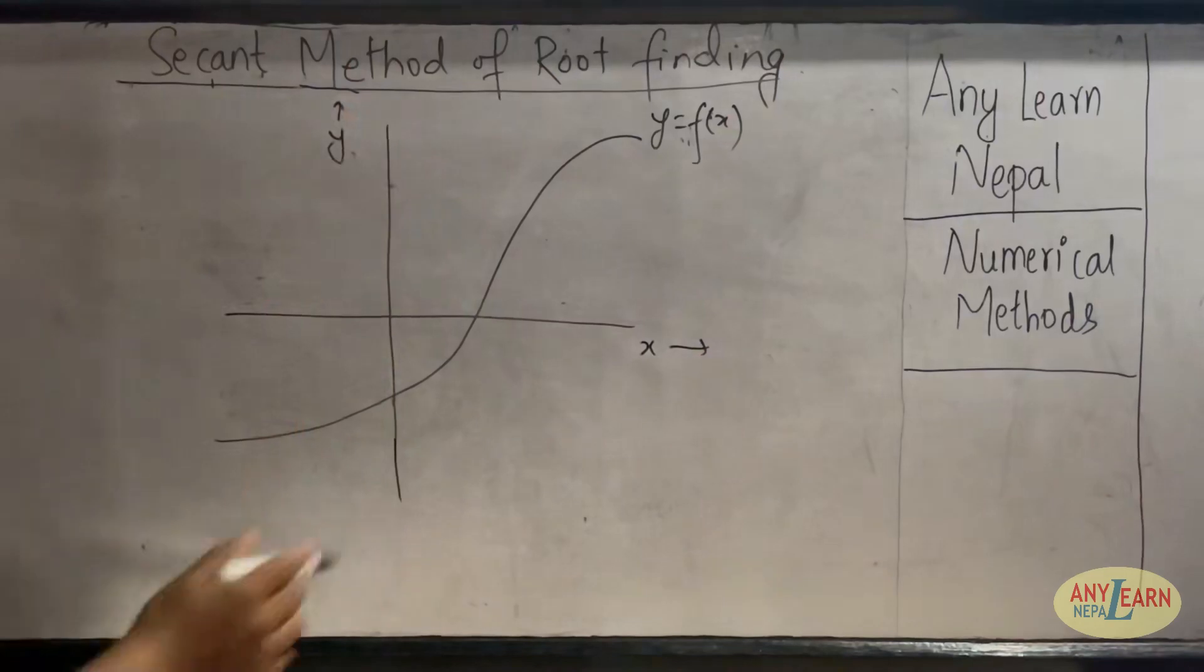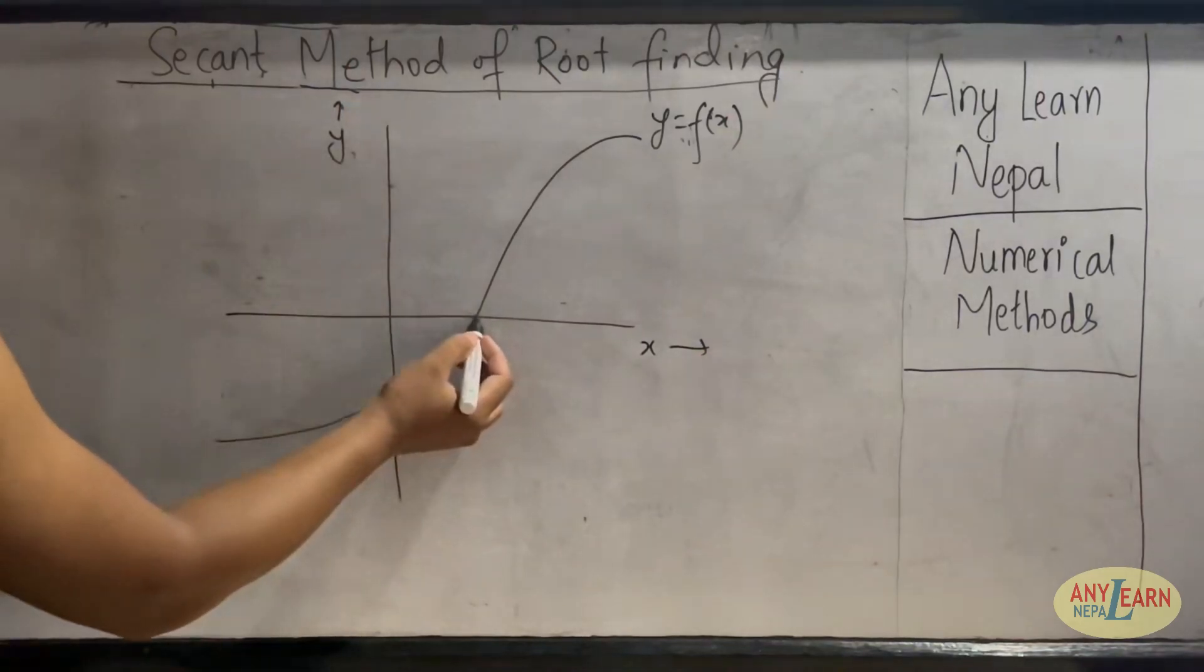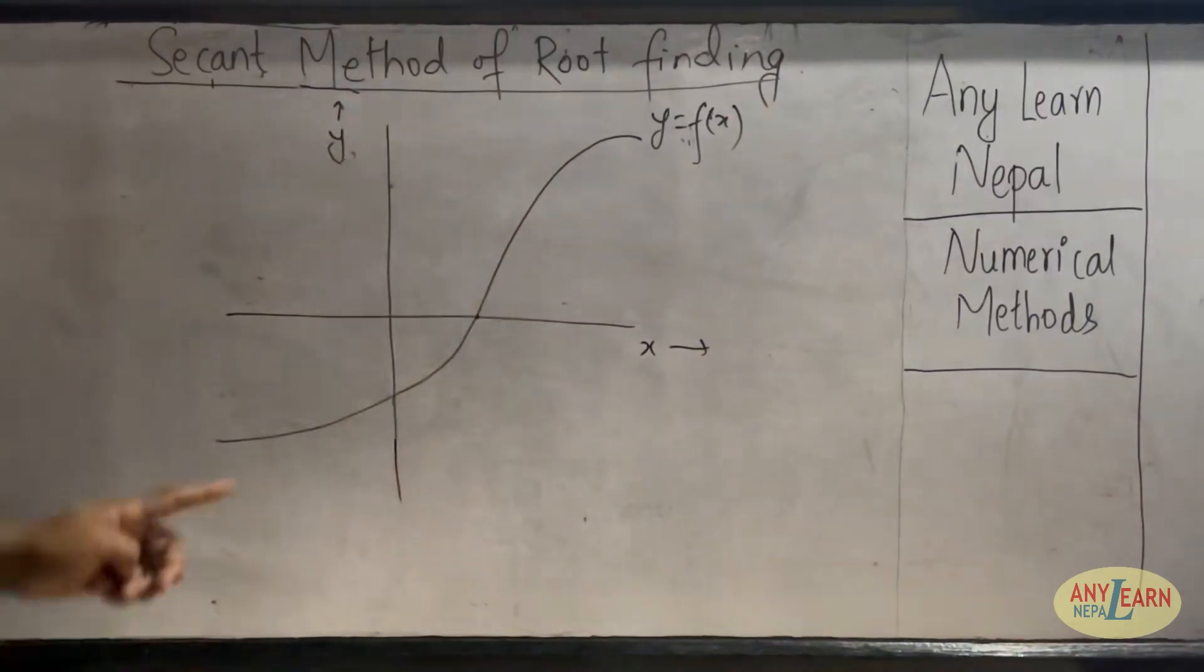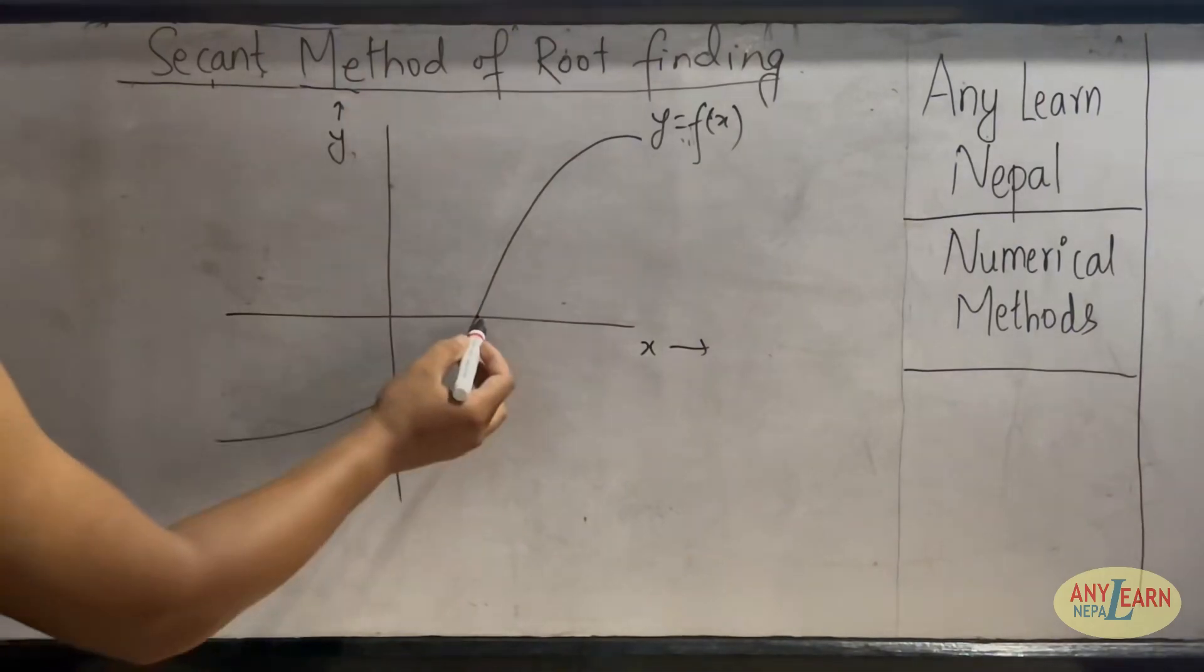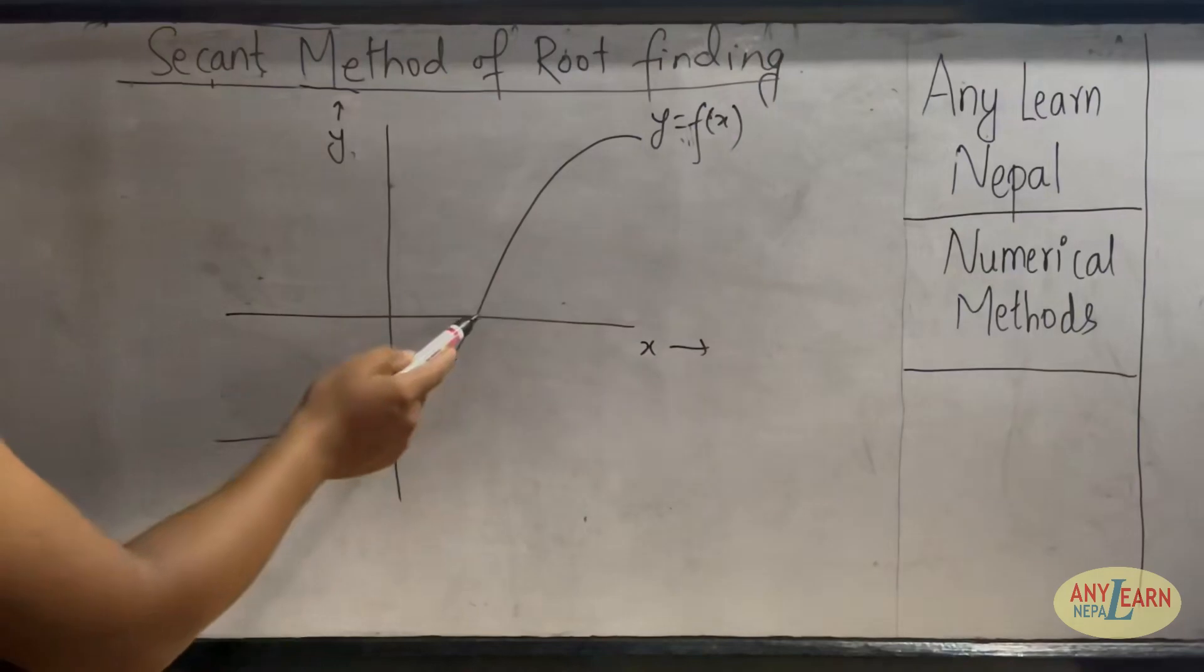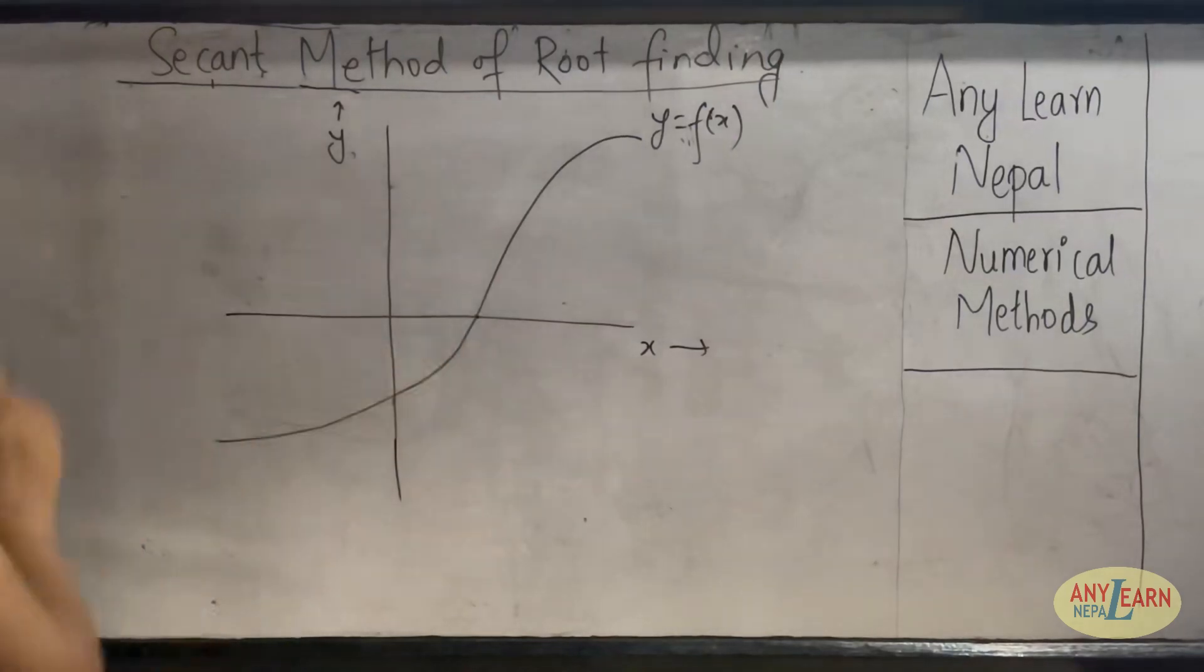So this point on the curve that crosses the x-axis is the root of the function. This point is the root of the function, and we have to find this particular value of x.